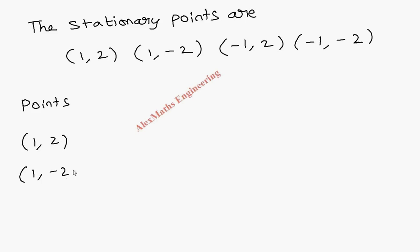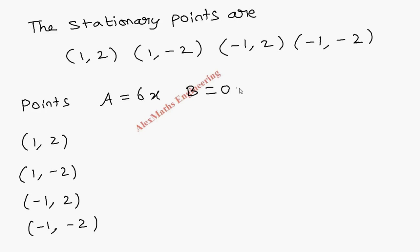Now we are going to frame a table with the points (1,2), (1,-2), (-1,2), and (-1,-2). The columns are A = 6x, B = 0, C = 6y, the condition AC - B², and the conclusion.